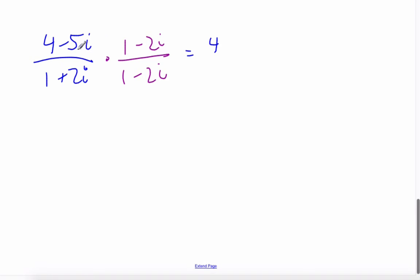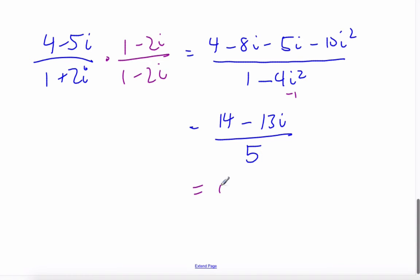So now I multiply, I get 4 minus 8i minus 5i plus 10i squared over 1 minus 4i squared, and so I get 14 minus 13i over 5, because that's 1, this is negative 1, so it makes 4, and I get 14 minus 13i, which is 14 over 5 minus 13i over 5, which makes me pause and wonder, because that was supposed to be negative 6.